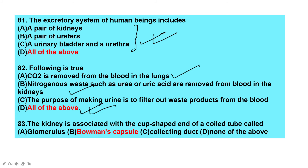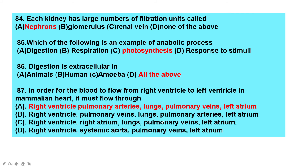The kidney is associated with a cup-shaped end of the coiled tube called Bowman's capsule. Each kidney has a large number of filtration units called nephrons. The functional and filtration unit of kidneys is nephrons — that is the right answer. An example of an anabolic process is photosynthesis.